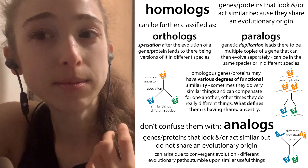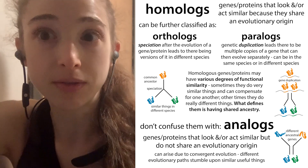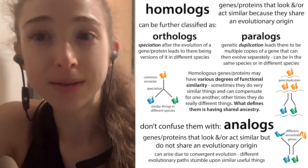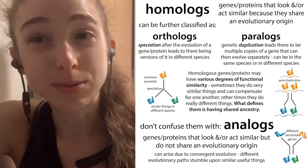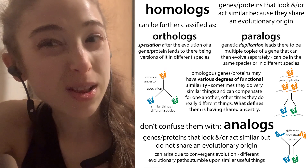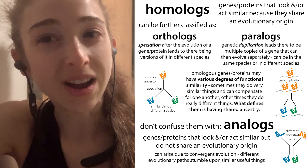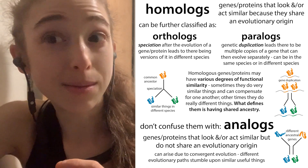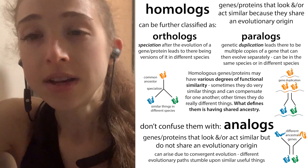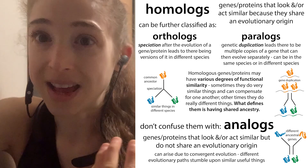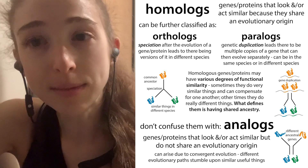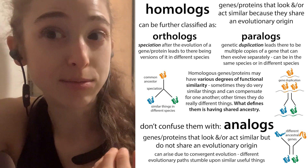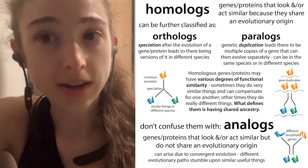Sometimes we don't even realize things are homologues when they are, but other times we think things are homologues when they're really not. In these cases, what we're talking about typically are analogues — things that act or look similar but don't share that same genetic origin.